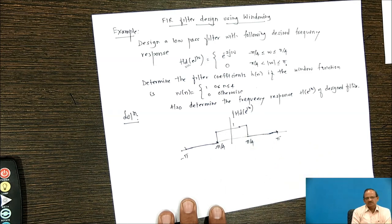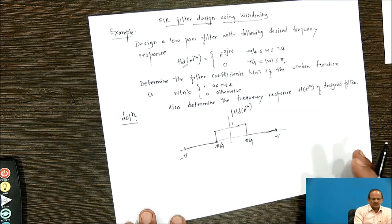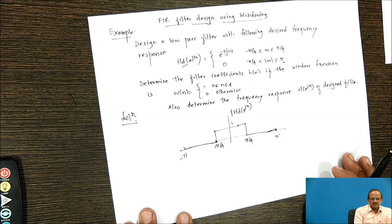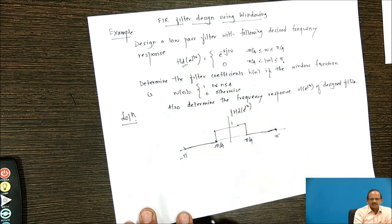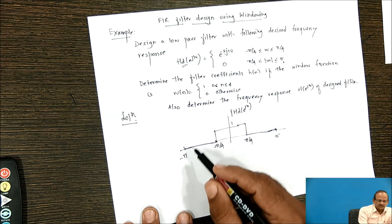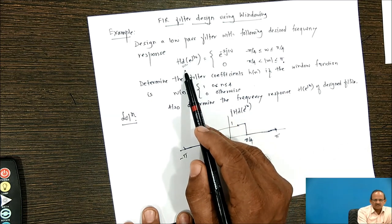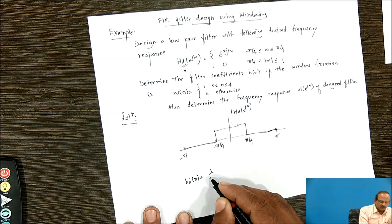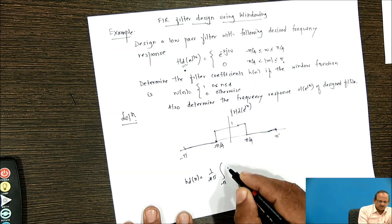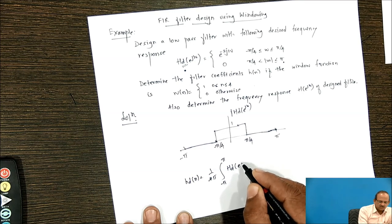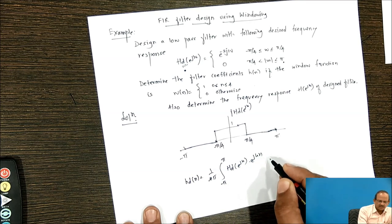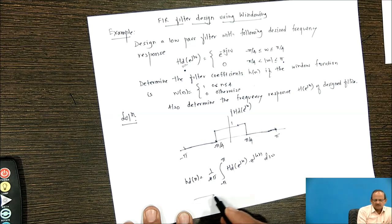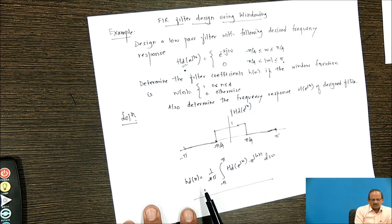Now we want to design the filter. The next step is to determine the desired impulse response from Hd(e^jω). This is obtained by taking the inverse Fourier transform of Hd(e^jω), written as hd(n) = (1/2π) ∫ from -π to π of Hd(e^jω) · e^(jωn) dω.